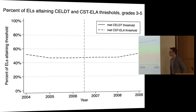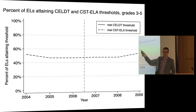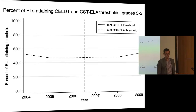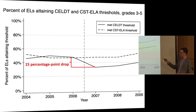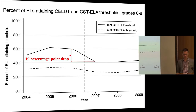Looking at data from LAUSD, I'm showing the percent of English learners who attain the threshold in different years. For the CST ELA — the test that did not change — there's nice continuity across years, as expected. For the CELT, there's a drop of 15 percentage points between the 2005-2006 and 2006-2007 academic years for grades 3-5. For middle school the drop is 19 percentage points, and for high school it's 31 percentage points — the rescaling became increasingly more difficult as grade levels increased.